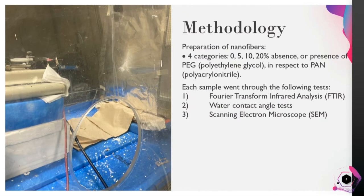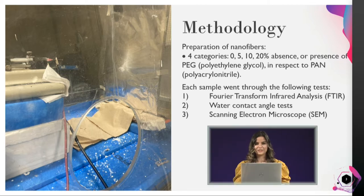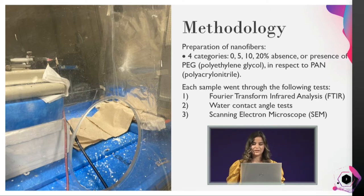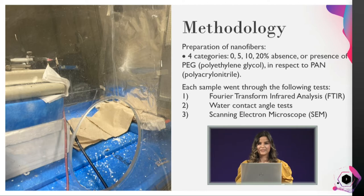For this research project, I made eight nanofibers which are divided into four categories. The first one had an absence of PEG in respect to PAN, so that means 0% PEG. The other three were 5, 10, and 20% presence of PEG in respect to PAN.